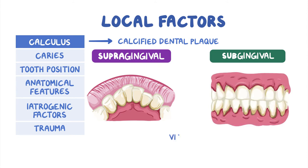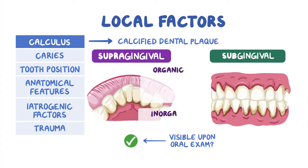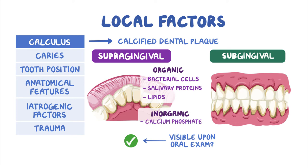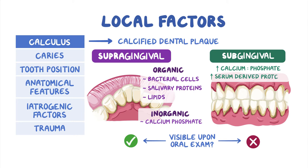Supragingival calculus is visible upon oral examination and is composed of organic and inorganic components. Organic components include bacterial cells, salivary proteins, and lipids. The inorganic component mainly consists of calcium phosphate. In contrast, subgingival calculus is not visible upon oral examination and is harder to remove. Additionally, subgingival calculus is associated with a higher calcium-to-phosphate ratio and more serum-derived proteins.